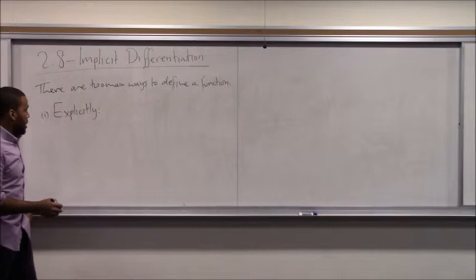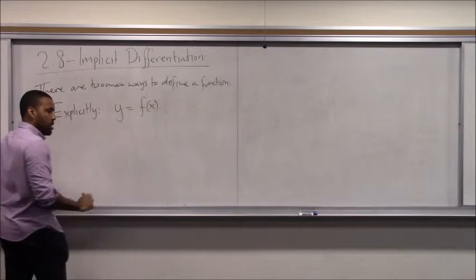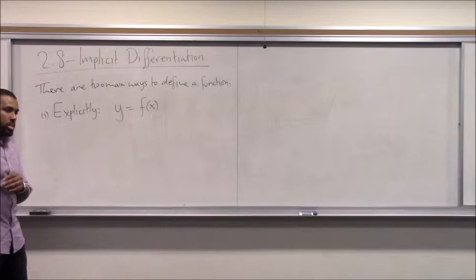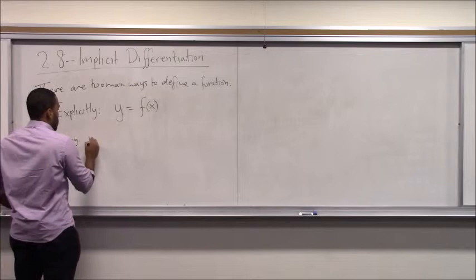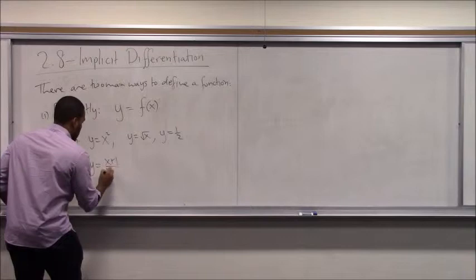When we define a function explicitly, we write y as a function of x — there's some rule over here with x's. Your y is isolated on one side of the equation, it's by itself, it's out in the open — it's explicit. So y equals x squared, y equals radical x, y equals one half, or y equals x plus 1 over x minus 3, et cetera.